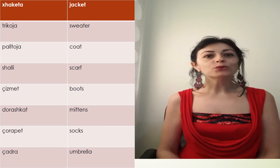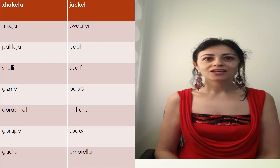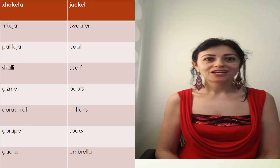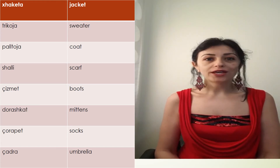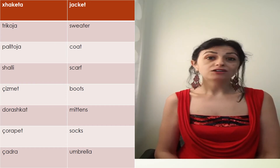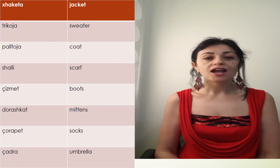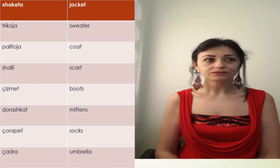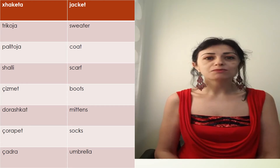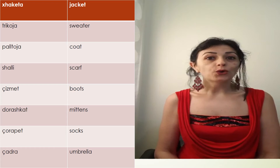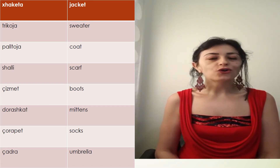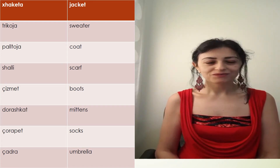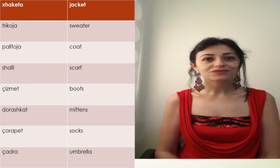Let's continue with some other words. Jacket in Albanian is jaketa. Sweater is trikoja. The coat is paltoja. The scarf is shali. The boots are çizmet. Mittens are dorashkat. The socks are çorapet. The umbrella is çadra.